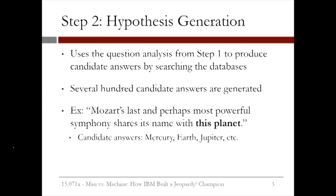The second step in Watson is hypothesis generation. The goal of this step is to use the question analysis from step one to produce candidate answers by searching the databases. In this step, several hundred candidate answers are generated. For the question, "Mozart's last and perhaps most powerful symphony shares its name with this planet," candidate answers could be Mercury, Earth, and Jupiter, generated using various search techniques.